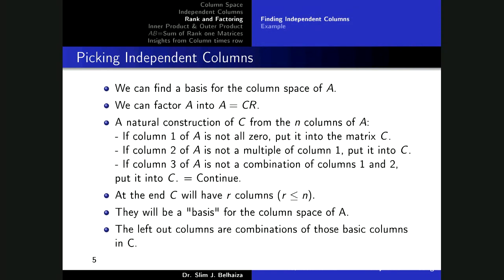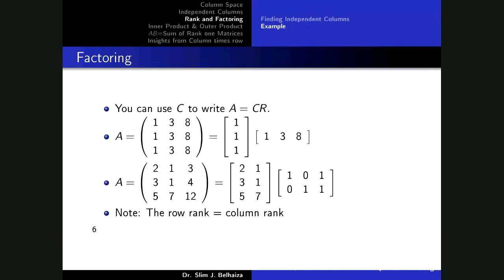We're trying to build C, which summarizes the independent columns of A. If column two is not a multiple of column one, then put it also in C. For column three of A, if it's not a combination of one and two, you can put it in C, and you can continue. At the end, you will have R columns. R is used for the rank of the matrix.